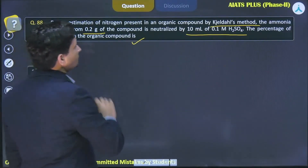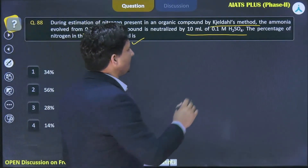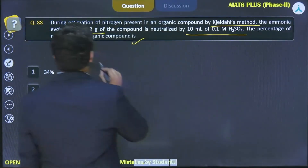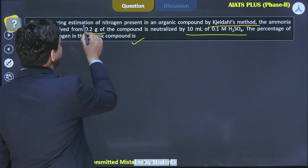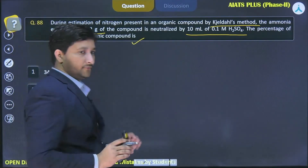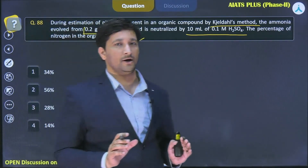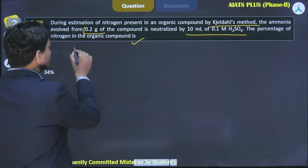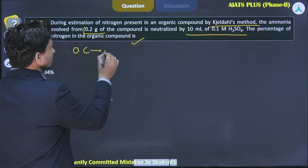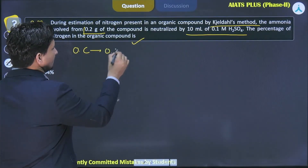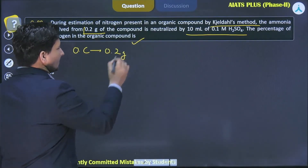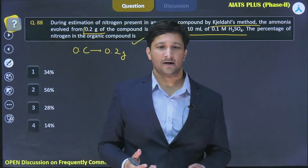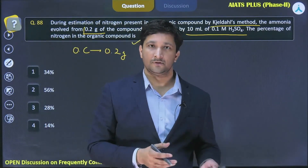During the estimation of nitrogen present in an organic compound by the Kjeldahl method, the ammonia evolved from 0.2 gram of the compound is analyzed. We have taken 0.2 gram of organic compound, and this 0.2 gram will contain a certain amount of nitrogen.